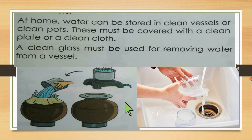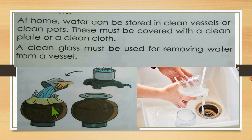Here you can see how to filter the water. First, the water is boiled. Then pour the water into a vessel using a cotton cloth to filter it. When we pour the water this way, the insoluble substances or all the mud get stuck to the cloth.